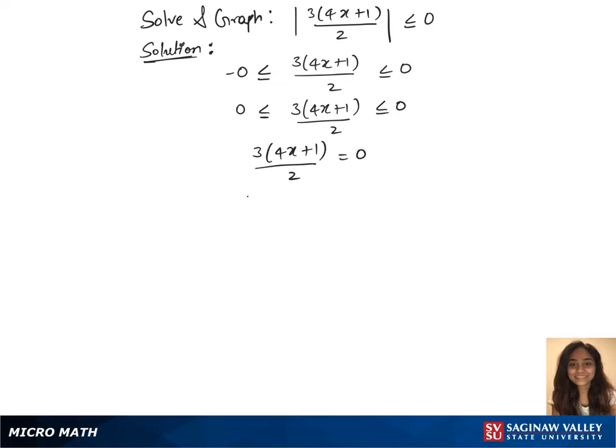We'll simplify this now by multiplying 2 on both sides, which gives us 3 times 4x plus 1 equals 0. Using the distributive rule, it gives us 12x plus 3 equals 0.